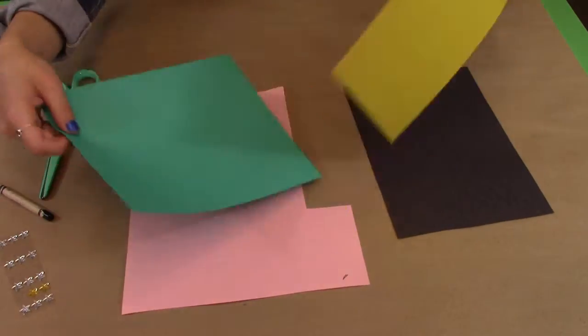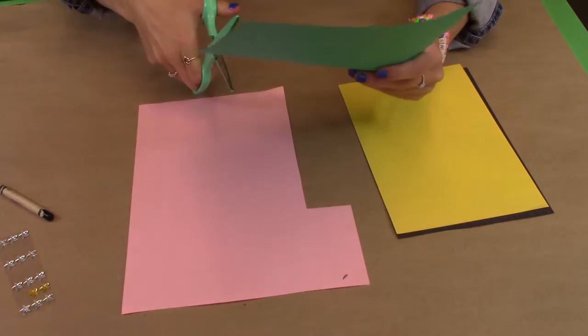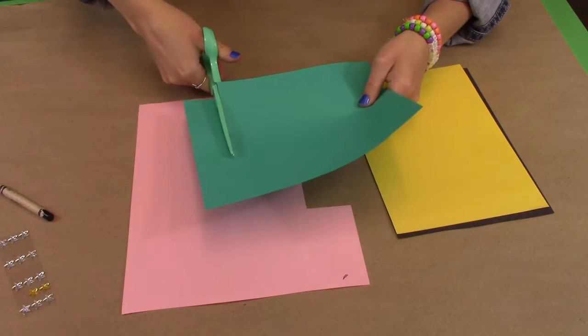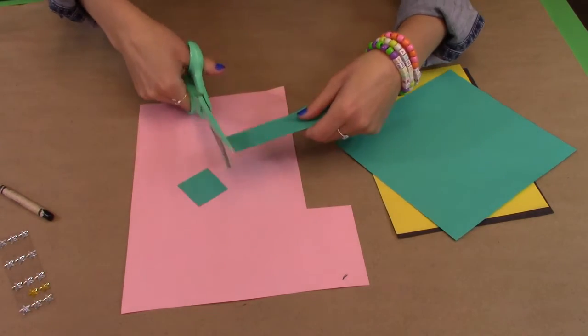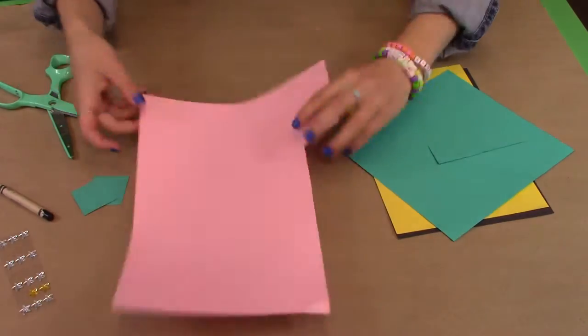What you start by doing is decide what word you're going to write, and you're going to need one square for every letter of the word. I'm going to choose to write the word 'read' on my rocket ship, so I need four squares.